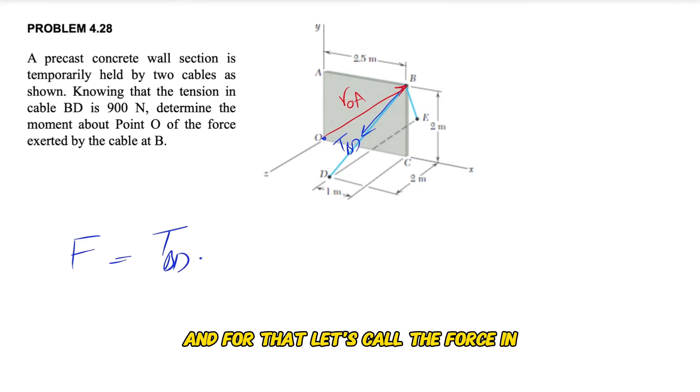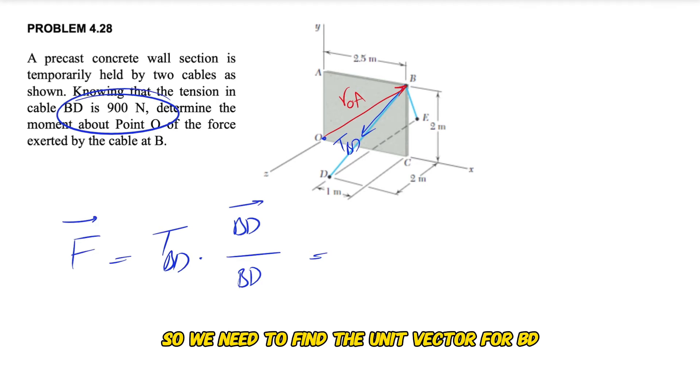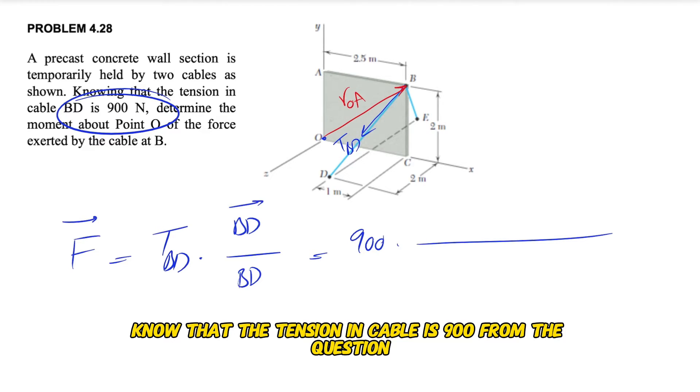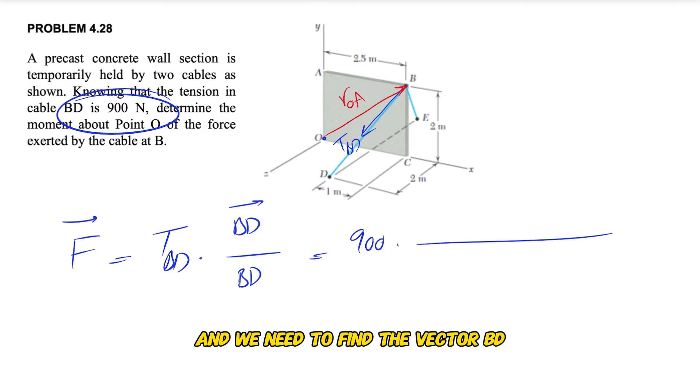Let's call the force in the cable T_BD. We need to find the unit vector for BD. We know that the tension in the cable is 900 from the question, and we need to find the vector BD.